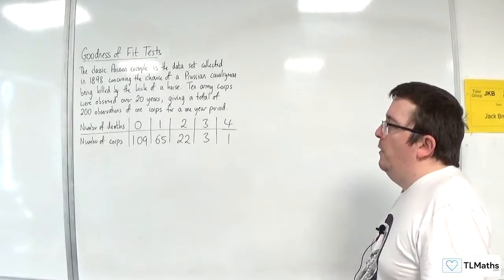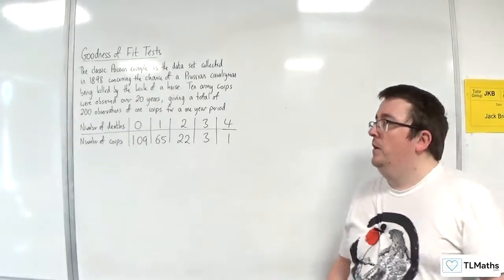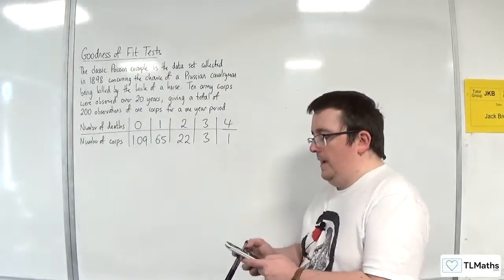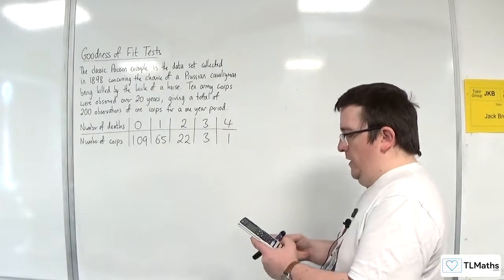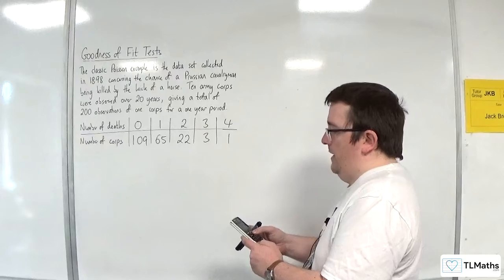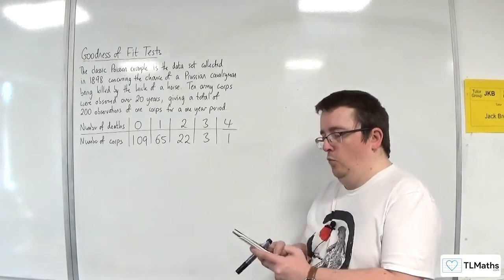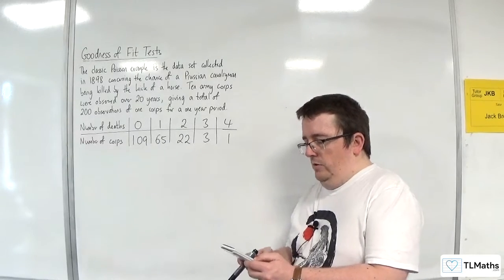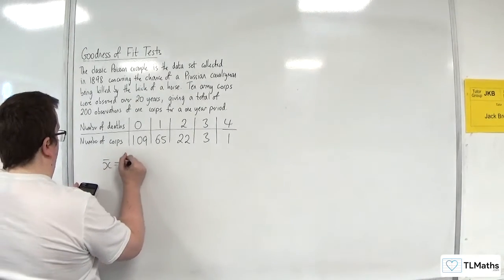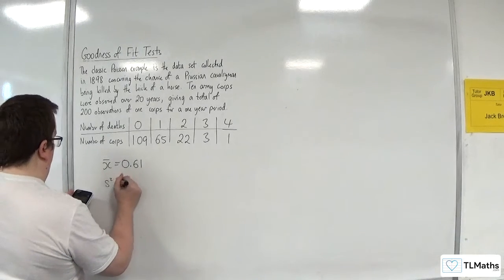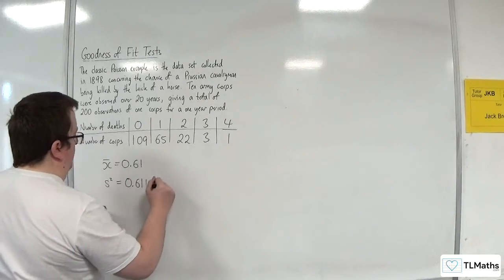So, the first thing that we might want to do is work out the mean and variance of this distribution. I'm going to plug it into my calculator. Menu number six, one variable. Zero, one, two, three, and four going into the X column. Frequencies: 109, 65, 22, 3, and 1. Option, one variable calculation. The mean is 0.61, and S squared, the variance, is 0.611 to 3 sig fig.